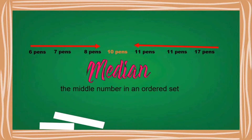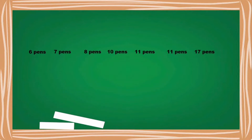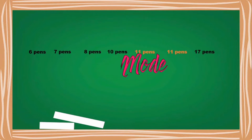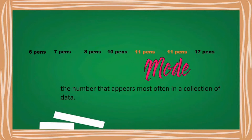The median is the middle number in an ordered set. Have you noticed a number which appears most often in our given set of data? Number 11 appears most often, and it is called the mode. The mode is the number that appears most often in a collection of data.